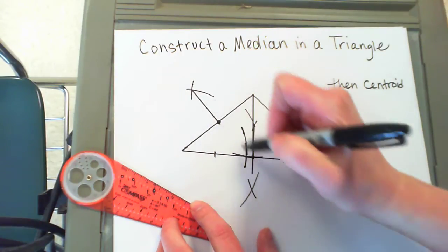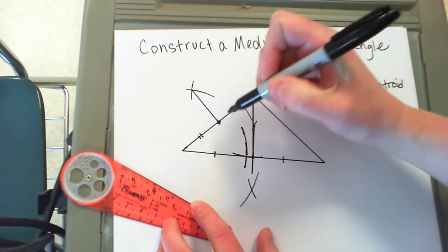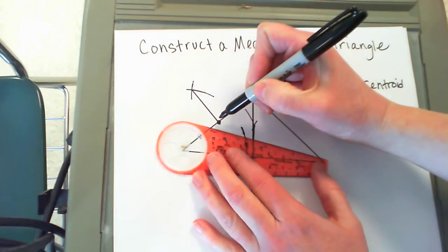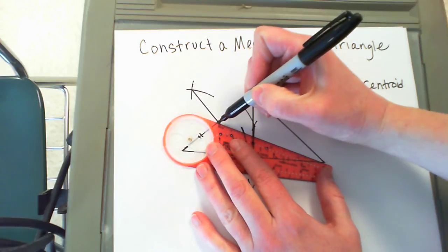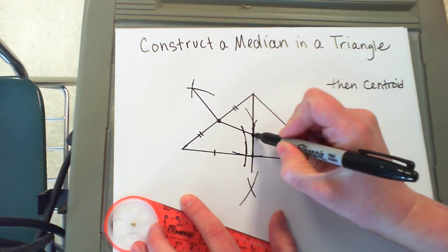Here's the midpoint because that's where the perpendicular bisector would have gone through. This side is congruent to that one. I connect this midpoint to the opposite vertex, and where my two medians meet is called the centroid.